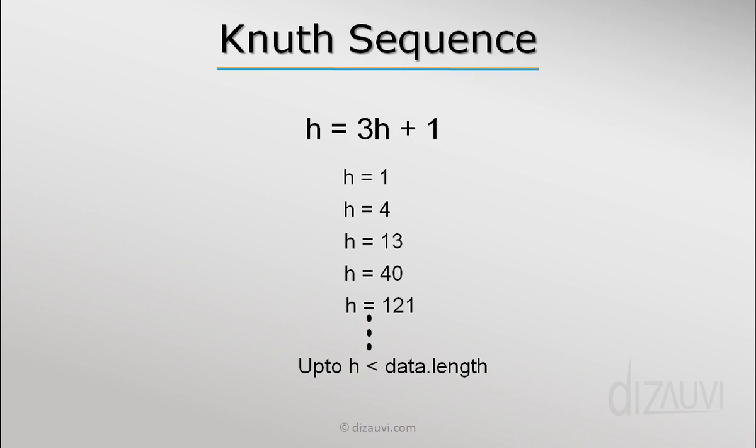Then we choose smaller and smaller intervals until we choose the value of h or the interval to be 1, which would be a regular sorting of the array. But by this time the array would have already been sorted to a great extent.